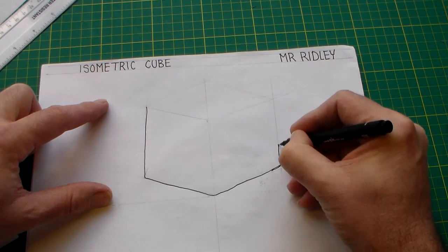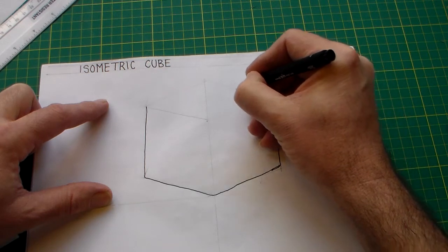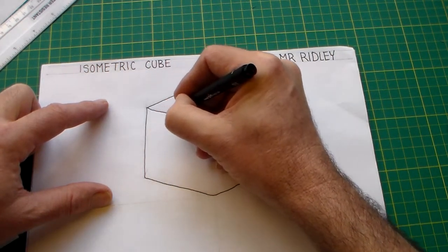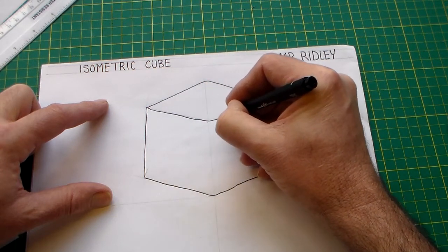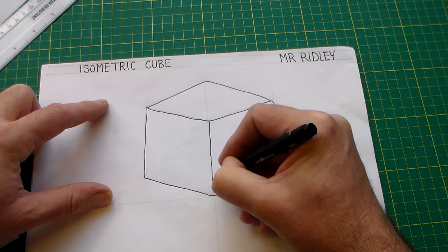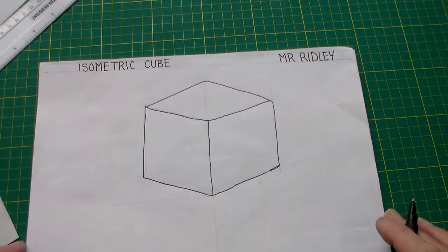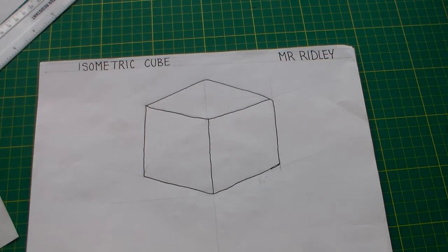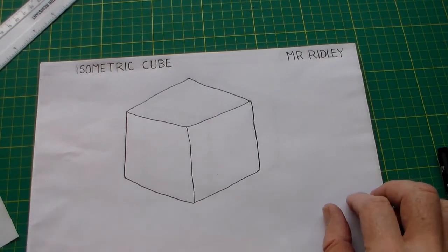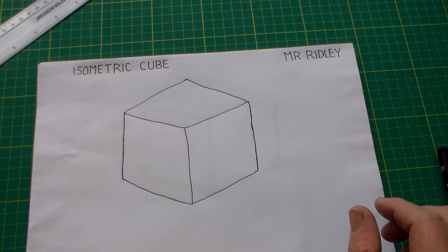You could use a ruler for this—it depends how regularly you want the cube to be. Now once we can draw a cube in isometric, we can do a lot of useful things.